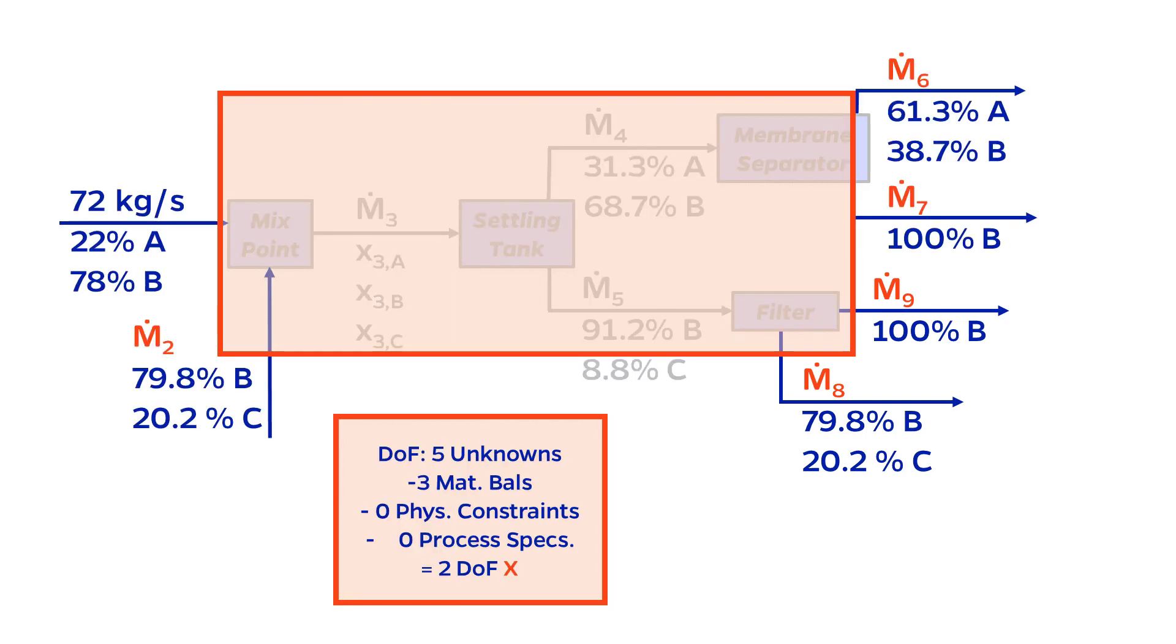Let's try the entire process. Notice that some streams are fully engulfed by my border, and those streams won't count. But sadly, I still have five unknowns: M2, M6, M7, M9, and M8, and only three material balances.